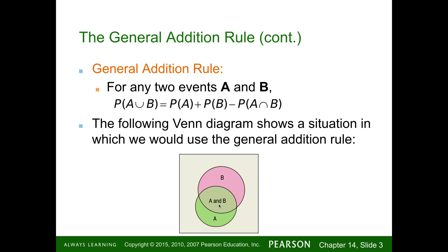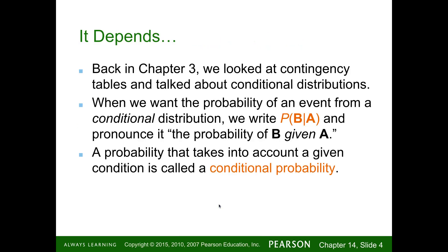This is not disjoint — remember, disjoint means two separate circles. Back in Chapter 3, we looked at contingency tables and talked about conditional distributions. When we want the probability of a conditional distribution, we write P(B|A), which is the probability of B given A.